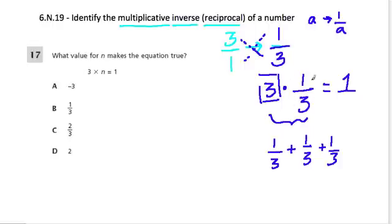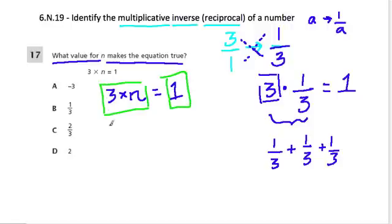Or you can think of this as 1 third of the number 3. So 3 divided by 3, which is also 1. And that's what they're asking here. They're saying, what value for n makes the equation true? Which means 3 times n equals 1. So what value do I plug in here so that the left side of the equation equals 1? And that is 1 third, because 3 times 1 third is equal to 1. So the answer here is B.